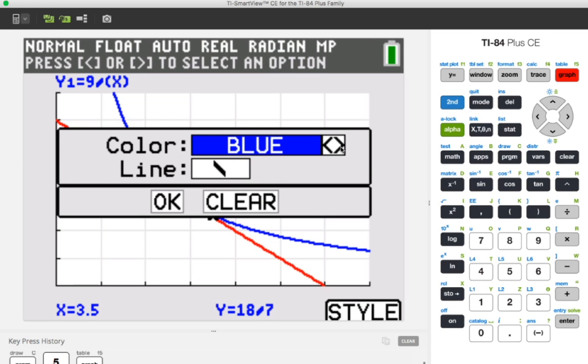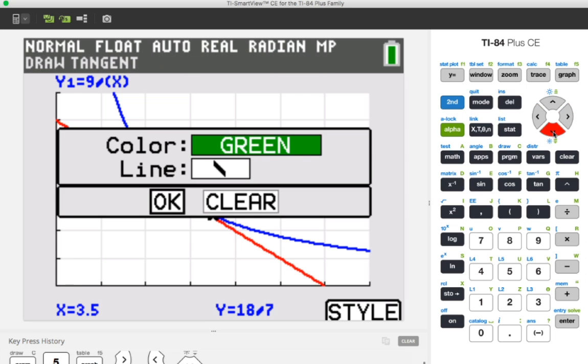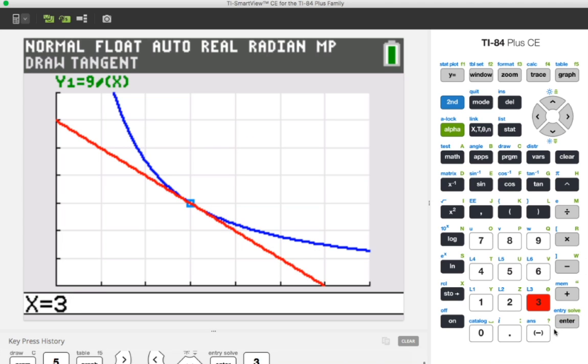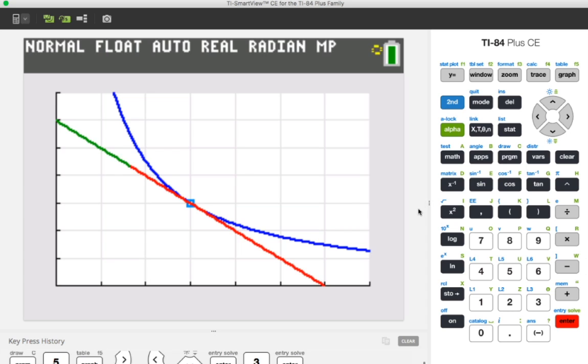And let's change the color from, it's currently blue, let's change the color to, let's go with green. And then let's press enter. And then we want to do this when x is three. So we press enter again, and we'll see the calculator is drawing in the tangent. We see it's actually overlapping the tangent, but we noticed that the equation looks a little bit different.